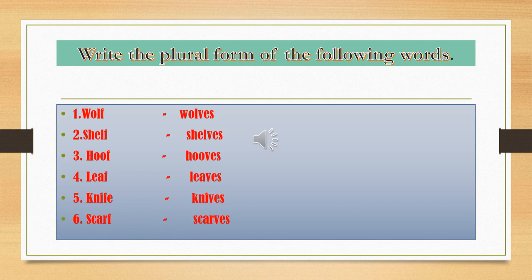On page number 60: write the plural form of the following words. Wolf becomes wolves. Shelf becomes shelves. Hoof becomes hooves. Leaf becomes leaves. Knife becomes knives. Scarf becomes scarves. What is common in all these words? In the singular, the last letter is 'F', and when we make the plural, the 'F' changes into 'VES.'